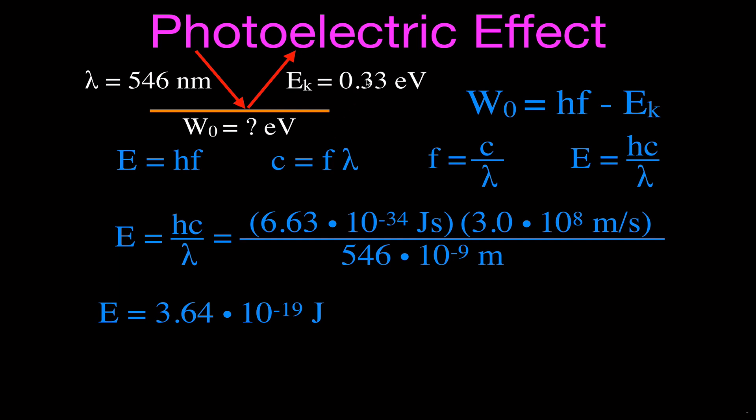Now, in order to put this number and this number into this equation, they have to have the same units. They're both energy. This is energy in electron volts. This is energy in joules, but they both have to be in the same unit. We could convert this to joules, but since the table had the values in electron volts, we're going to convert this to electron volts, and you know that one electron volt is 1.6 times 10 to the minus 19 joules.